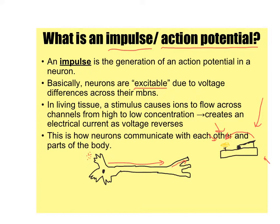The action potential will travel down the axon to the axon terminals and the synaptic end bulbs, which will release neurotransmitters on the other side. The stimulus has to be strong enough — just like the mousetrap. If it's not strong enough, the mousetrap just stays there. Same thing with a neuron: a neuron either fires a full action potential or it does not fire at all. That's called the all-or-none principle.